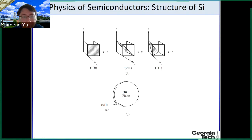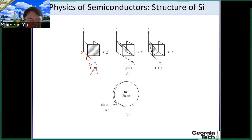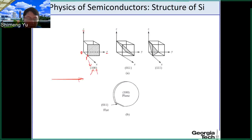It's called the (1,0,0) plane. The trick is that you look at the intersection between the plane and the x, y, z axes. In this case, the plane intersects the x-axis at unit length 1. That's why you get 1. This plane is parallel with the y and z axes, so if it's parallel, we denote it as 0. The first 0 is because it's parallel with y, and the second 0 is because it's parallel with z. That's how you get the (1,0,0) plane.